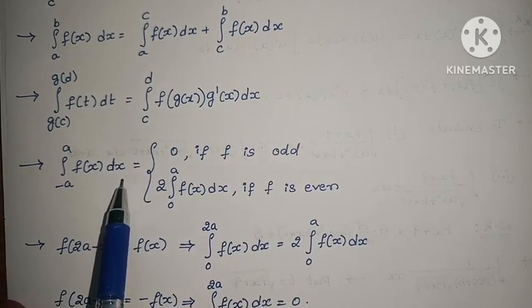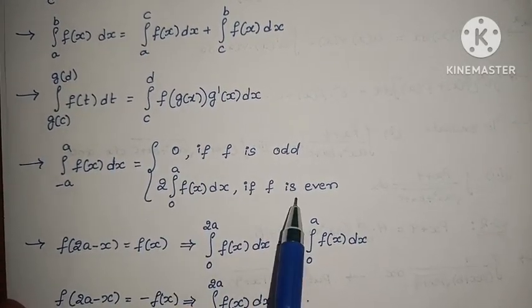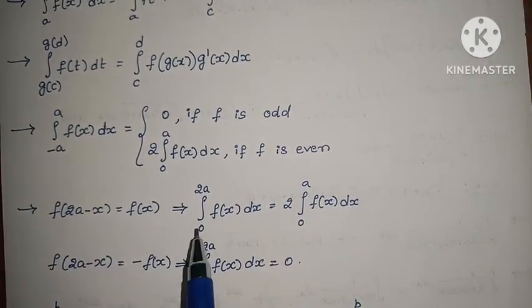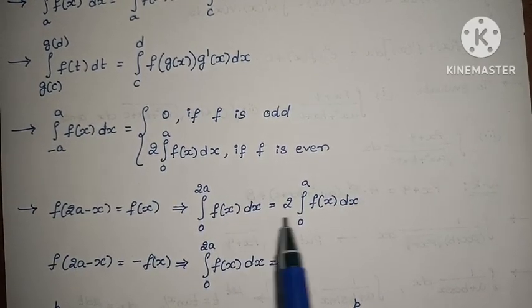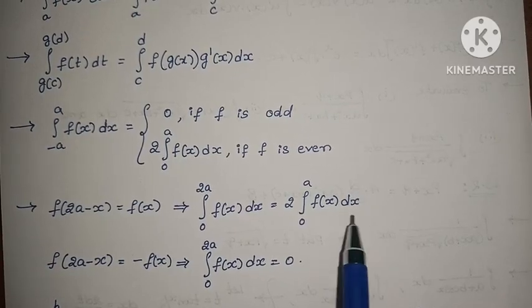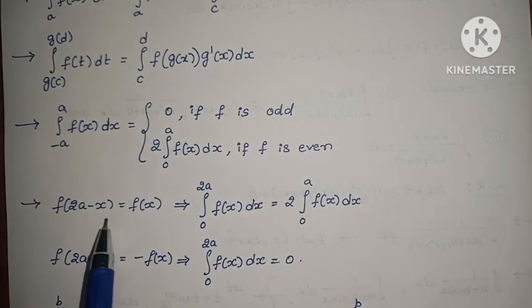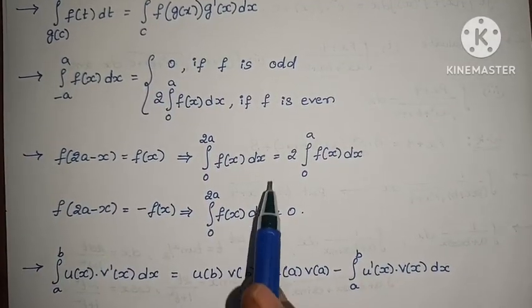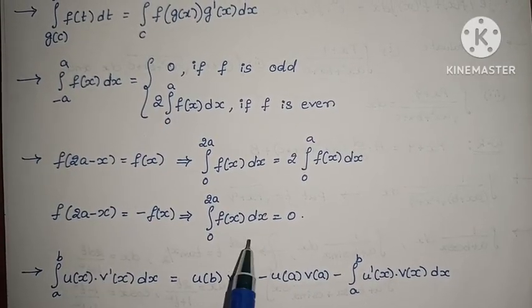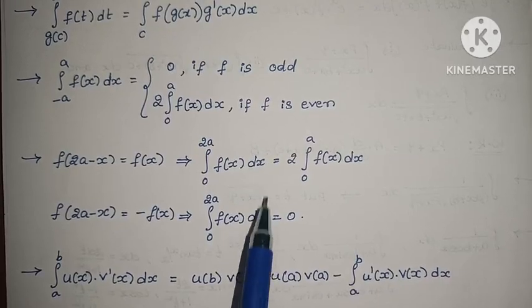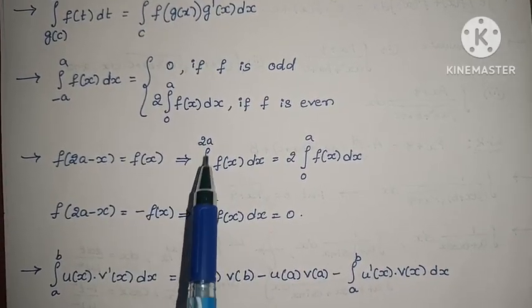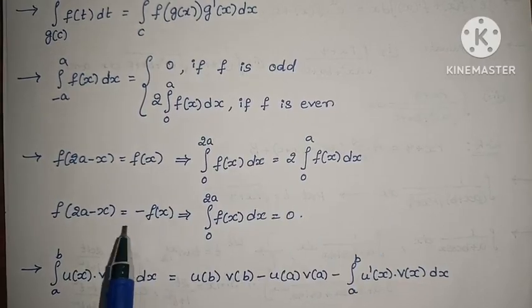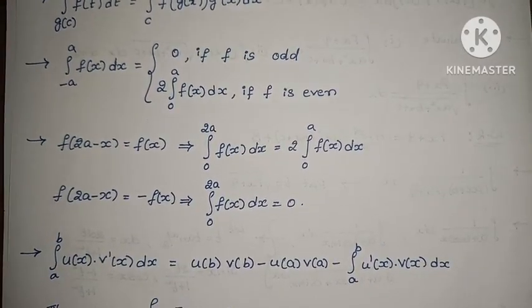For integral minus a to a of f(x) dx: if f is odd, value is zero; if f is even, value is 2 times integral 0 to a of f(x) dx. For integral 0 to 2a of f(x) dx: if f(2a-x) equals f(x), then value is 2 times integral 0 to a of f(x) dx. If f(2a-x) equals minus f(x), then value is zero. Remember these — they are very useful in many problems.